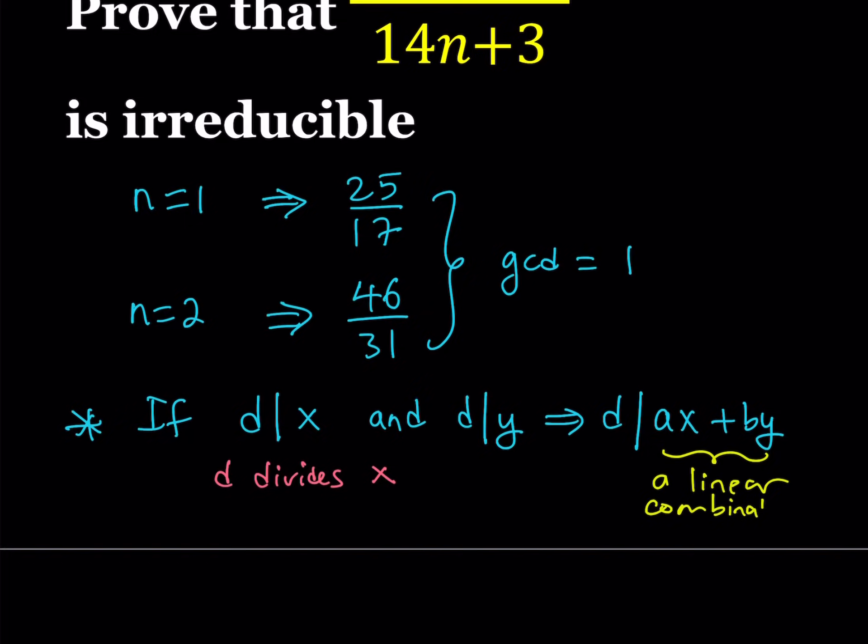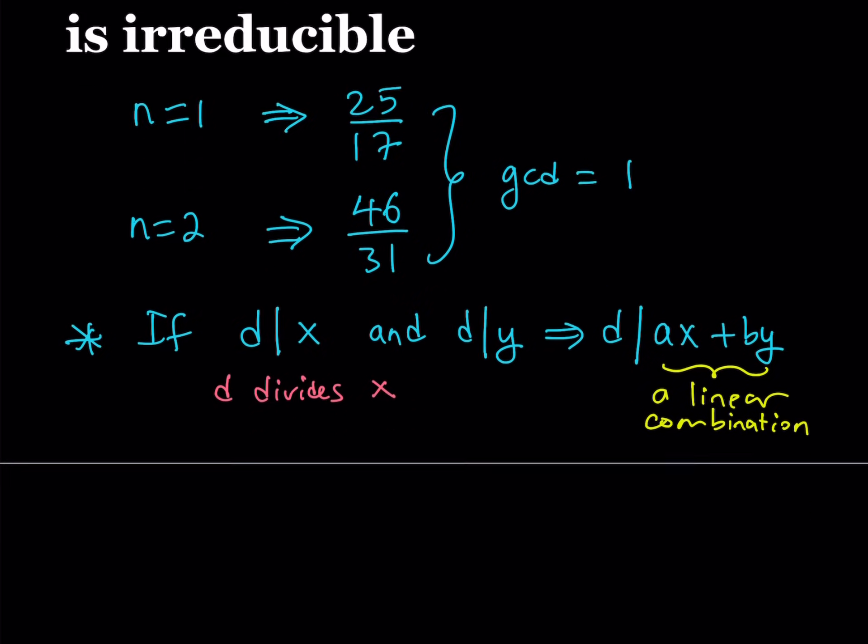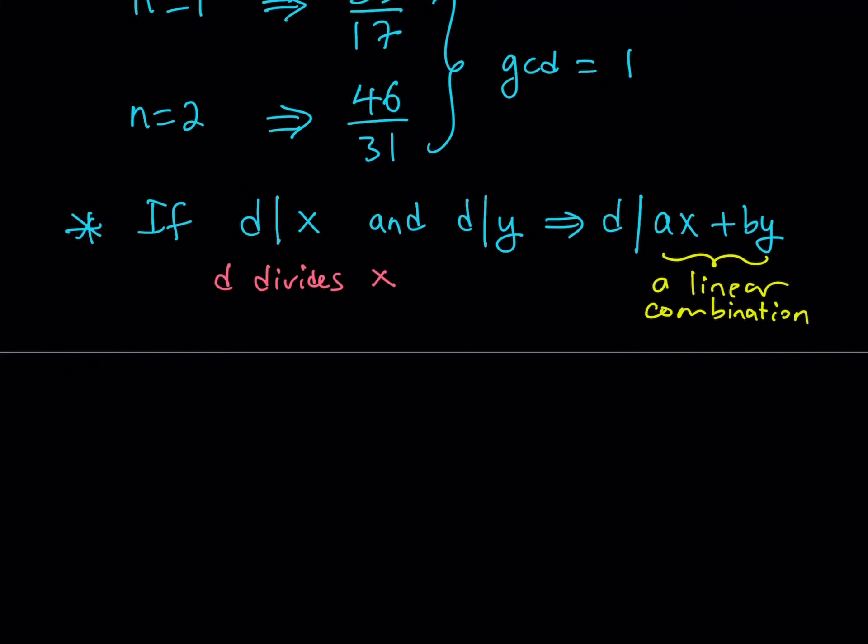What this gives us is actually very significant. This is called a linear combination of x and y. Linear algebra actually deals with linear combinations, but we're not going to get into depth here. I'm just going to tell you what it is. This is called a linear combination of x and y. So if d divides x and d divides y, then it also divides their linear combination.